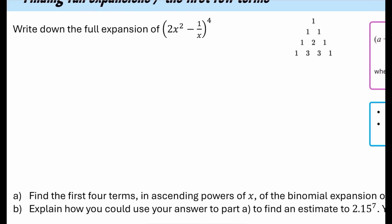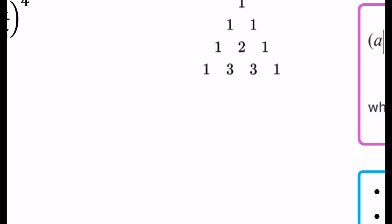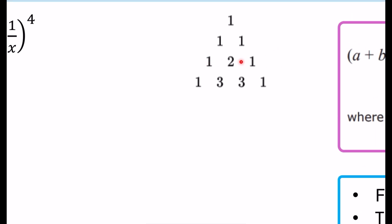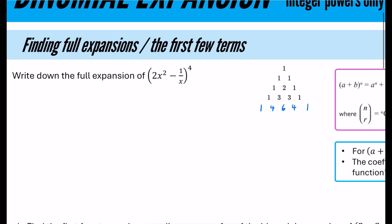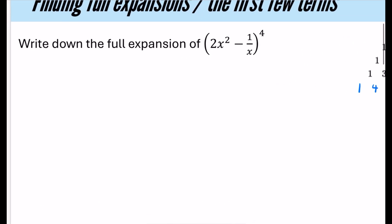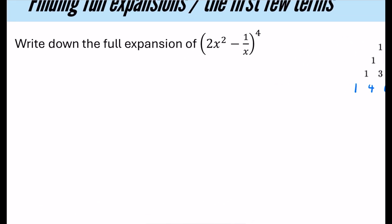We're going to write down the full expansion of (2x² − 1/x)⁴. For power of four, the Pascal's triangle row gives coefficients 1, 4, 6, 4, 1.